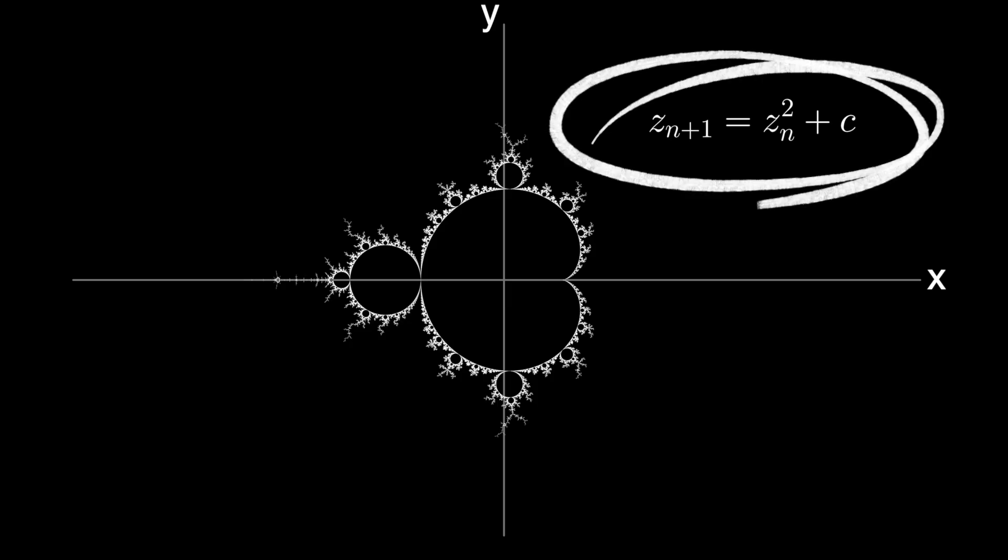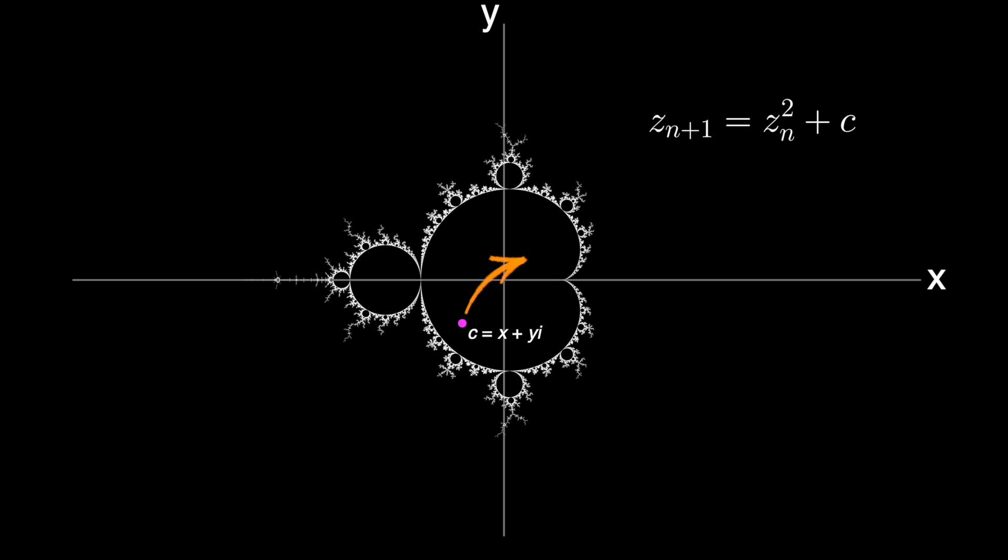Recall that the Mandelbrot set is based on repeated iteration of this quadratic function over the complex numbers. If the iteration converges to a fixed point or repeating pattern, then the constant c is in the Mandelbrot set. If the iteration diverges, then c is outside the set.